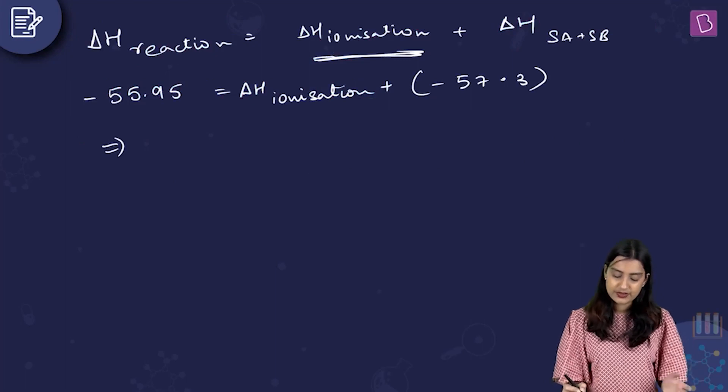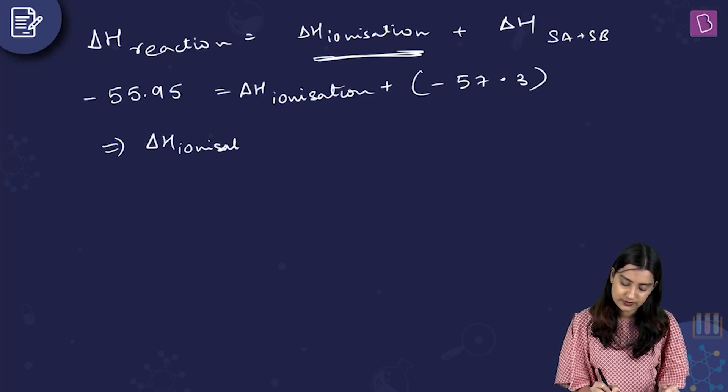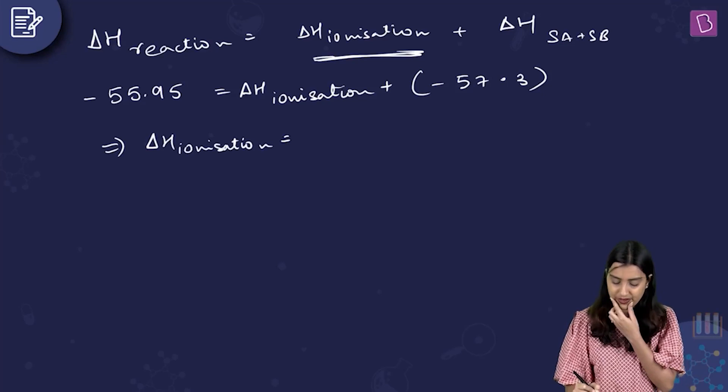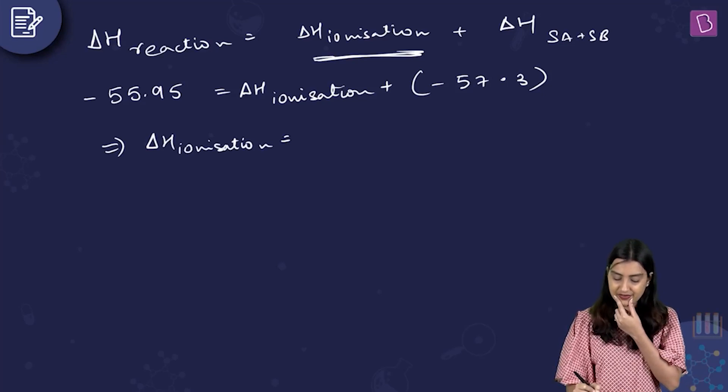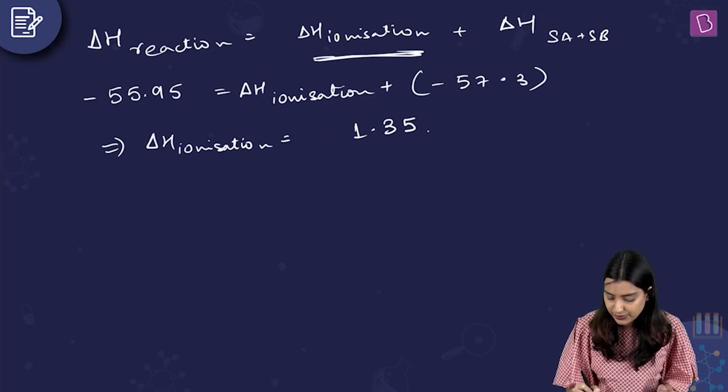So, subtract. You get delta H ionization is equal to - what do you get? You have 57 minus 56, so you have 1.35.